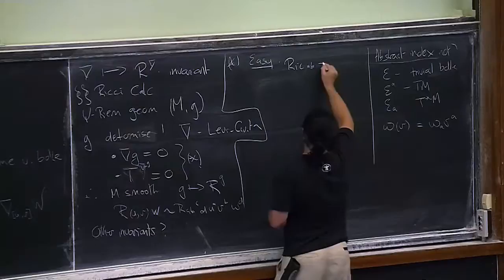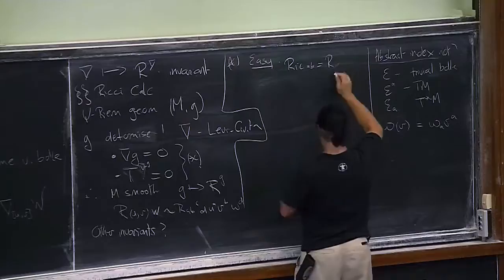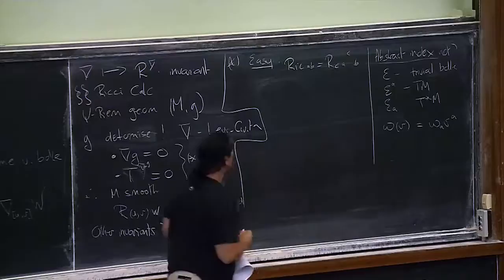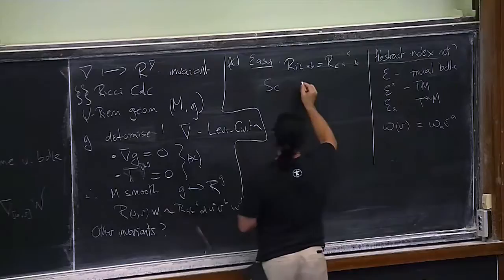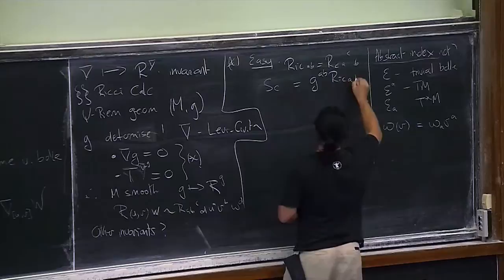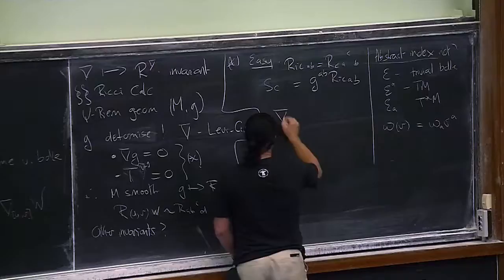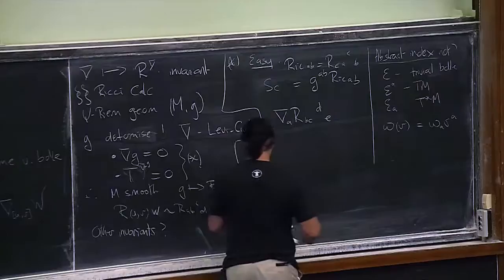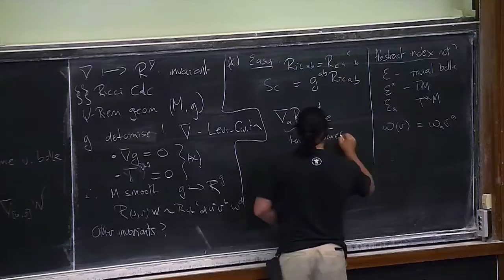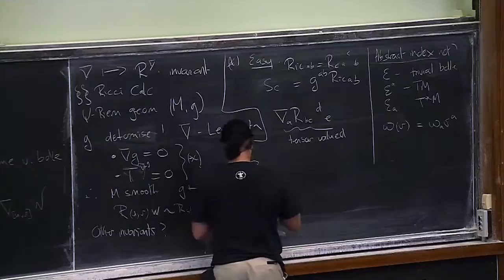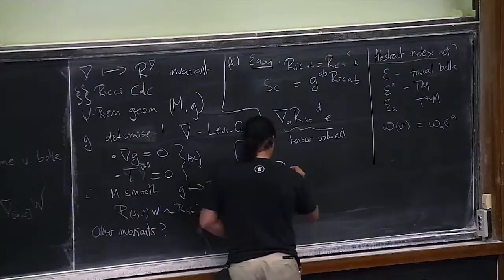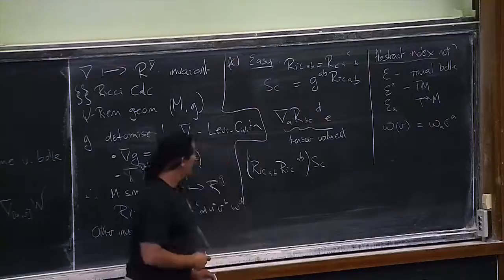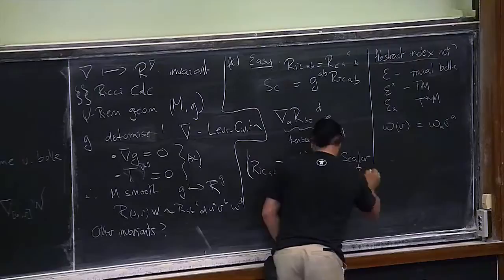It's easy to see that we can at least proliferate invariants. For instance, the Ricci curvature is just a contraction of the Riemann: R_{ACBC} — that is an invariant of the metric. The scalar curvature is then G^{AB} times Ricci_{AB}, just a trace of Ricci of course. These are invariants, and then you can take the covariant derivative acting on the curvature, and that is also an invariant of the structure — a tensor-valued invariant. You can obviously contract things together, for instance Ricci_{AB} Ricci^{AB} times the scalar curvature — that would be a scalar invariant.